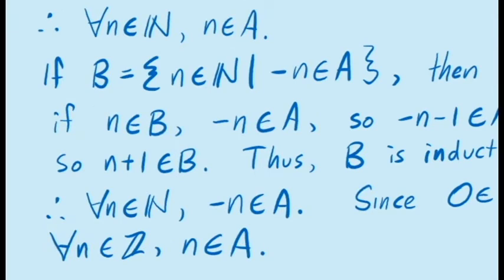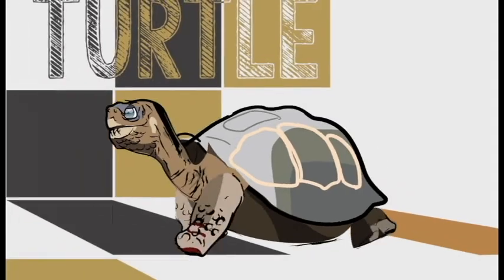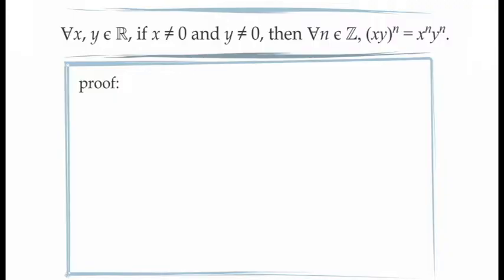To see how this works, let's look at an example. We're going to prove that for all values of x and y in the real numbers, if x and y are not equal to 0, then for all values of n in the set of integers, xy to the exponent n is equal to x to the exponent n times y to the exponent n. We've already proven this is true for all values of n in the set of natural numbers; the only difference is that now we're going to extend this to negative exponents as well.